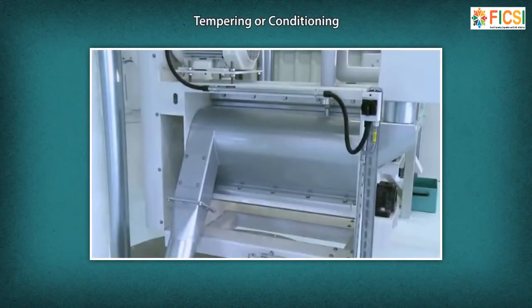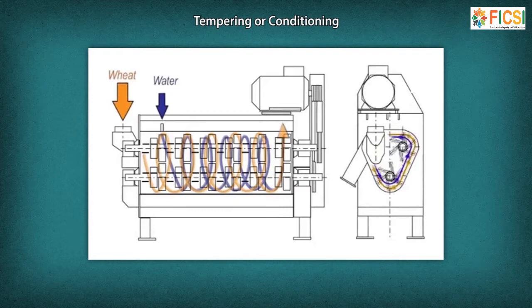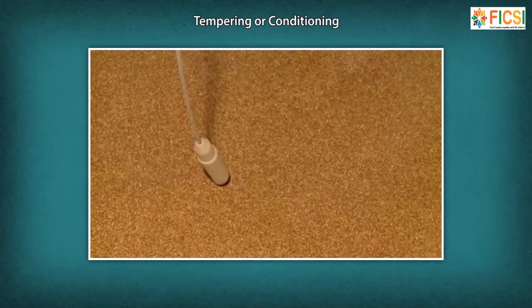Tempering or Conditioning: Modern milling practices utilize conditioning or tempering before the grain is ground. This involves adding water to grain to raise the moisture of hard grain. After moisture is added, the grain lies in tempering bins or drying units for the desired hours. Tempering softens or mellows the endosperm, making it easier to grind.